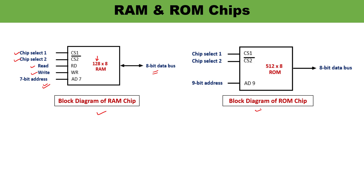The block diagram of the ROM chip shows a capacity of 512 x 8 bits, meaning it requires 9 address lines because 2 raised to the power 9 equals 512. Since it is read-only memory, data can only be read from the memory — data is unidirectional. Again there are 2 chip select lines: chip select 1 is active high, chip select 2 is active low. This is just a brief review of the RAM and ROM chips.